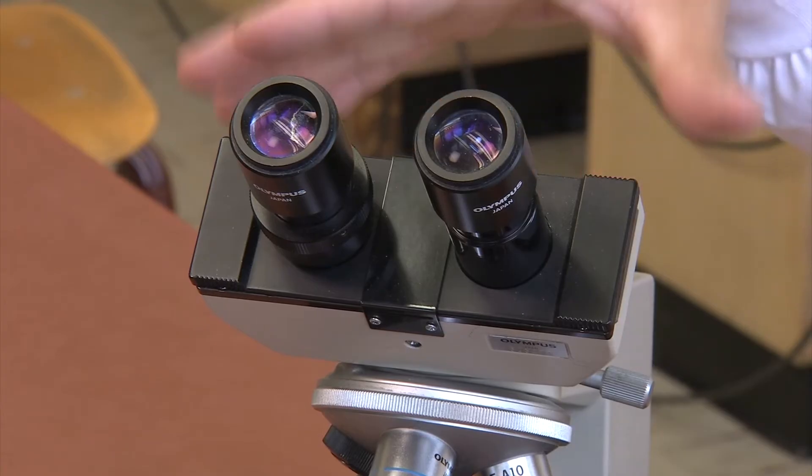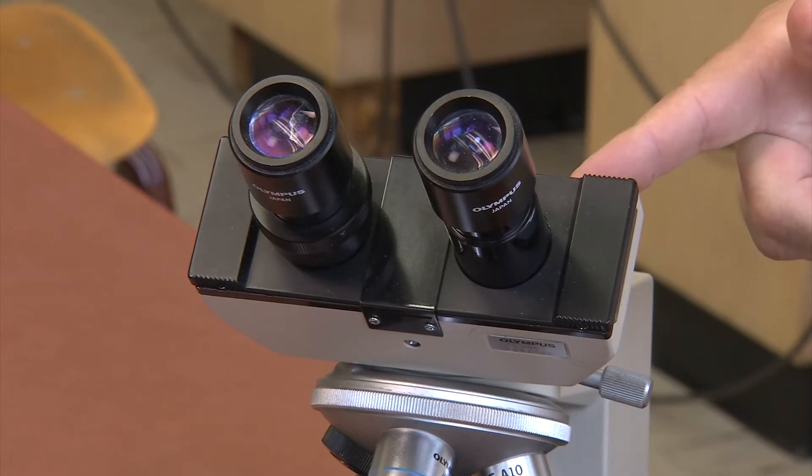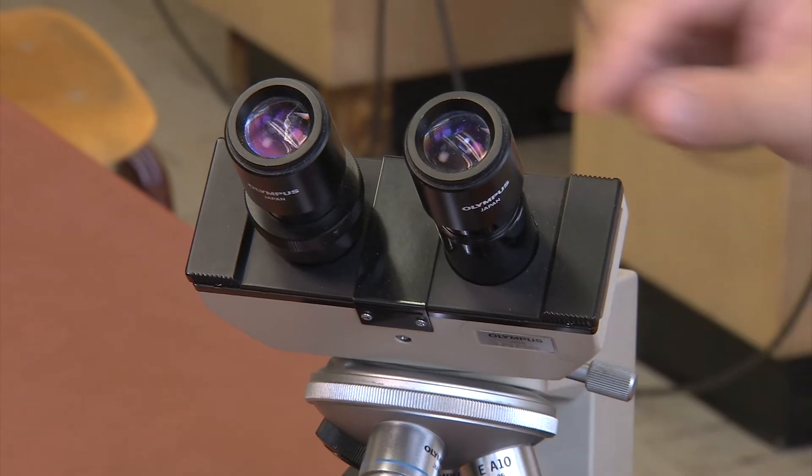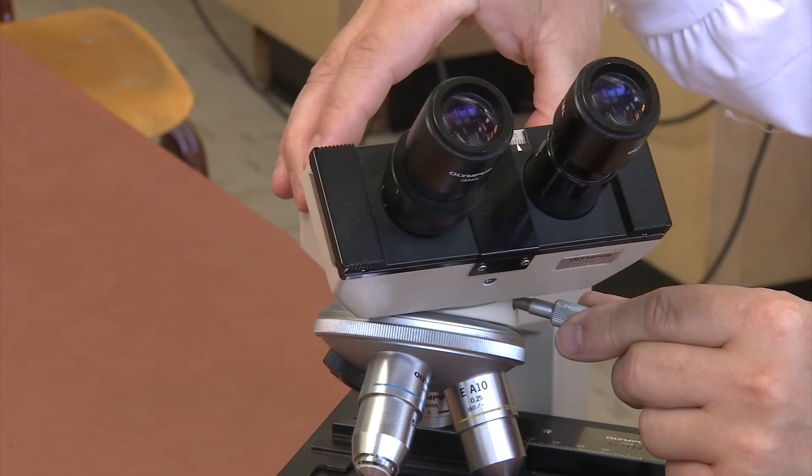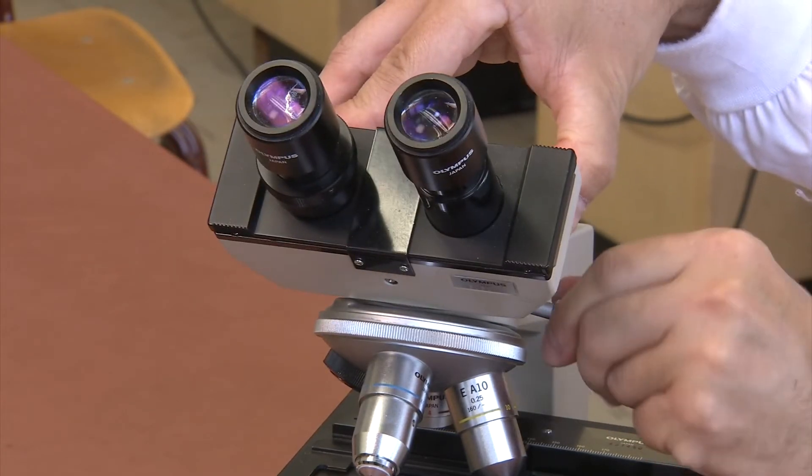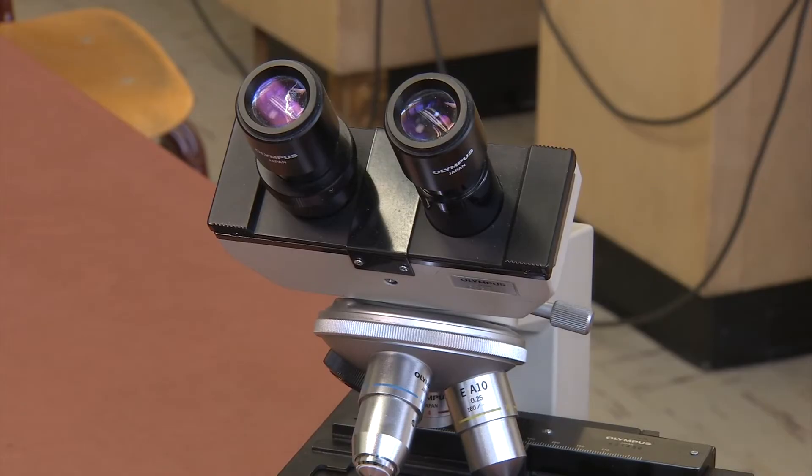The oculars and interpupillary distance scale are located on the top of the binocular tube. At the side may be a clamping screw. Loosening this allows the binocular tube to rotate. For the purposes of this lab, the clamping screw should be left tight. A loose binocular tube can damage the microscope or your sample.